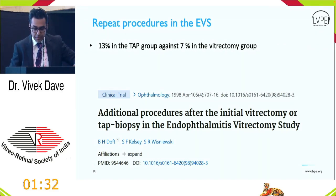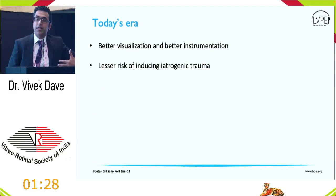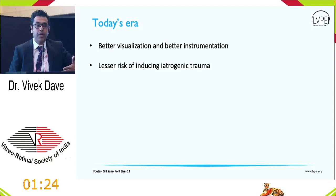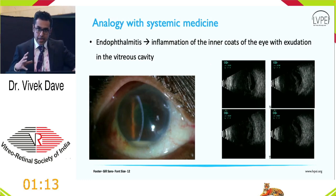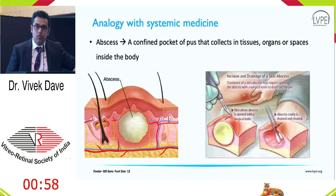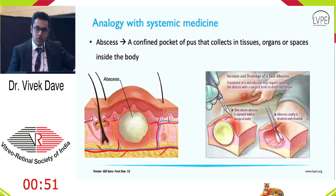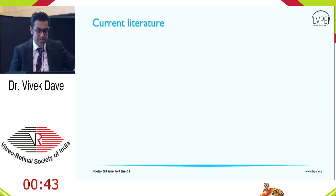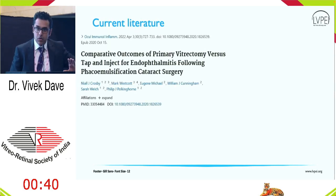Why was vitrectomy restricted in those days? The armamentarium available at that time was limited. Now we have better visualization, better instruments, and lesser risk of iatrogenic trauma. Taking an analogy from systemic medicine: endophthalmitis is inflammation of the inner coats of the eye with vitreous exudation — analogous to a skin abscess, a confined pocket of pus. In surgery, we know that a skin abscess must be fully cleared to heal well. Taking the same analogy: with good visualization and modern surgical armamentarium, it is prudent to remove the entire vitreous as far as possible.